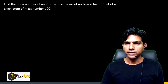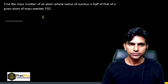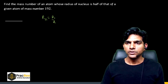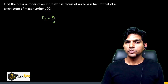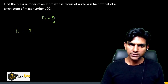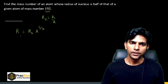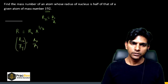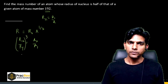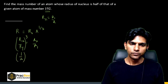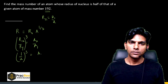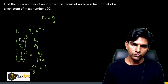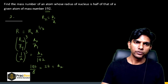The next question is from Nuclei — size of the nucleus. The radius of a nucleus is R = R₀ × A^(1/3). We need the mass number A₂ of an atom whose nuclear radius is half that of an atom with mass number A₁ = 192. R₂/R₁ = (A₂/A₁)^(1/3) = 1/2, so A₂/A₁ = 1/8, giving A₂ = 192/8 = 24.